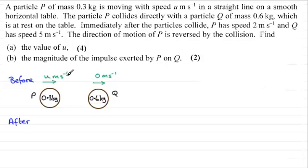Now after the impact we're told that P's direction of motion is reversed. So we'll just put that going in the other direction. And we're told it's going at two meters per second. And Q moves off with a speed of five meters per second. So I'll put that to the right there going at five meters per second. So that's the typical kind of diagram that I'd want to draw in this.